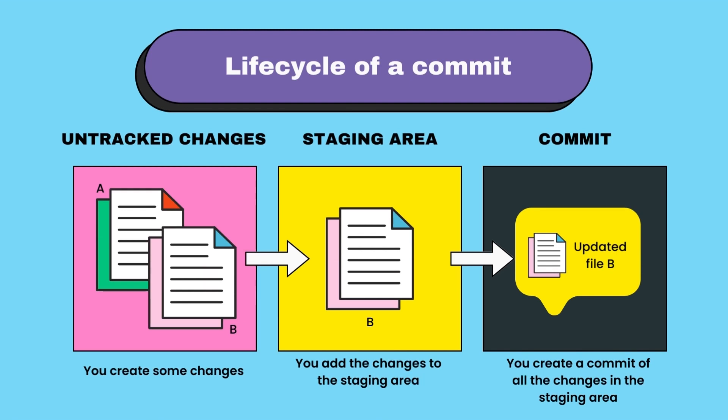When you use the command git add, it adds those files to a staging area. The staging area is a hypothetical area before the commit stage. All the changes you add to the staging area are what become part of the commit when you run git commit -m. All the changes that have not been added to the staging area are not part of that commit. This is useful when you want to create two or more separate commits out of all the changes you have made so far.